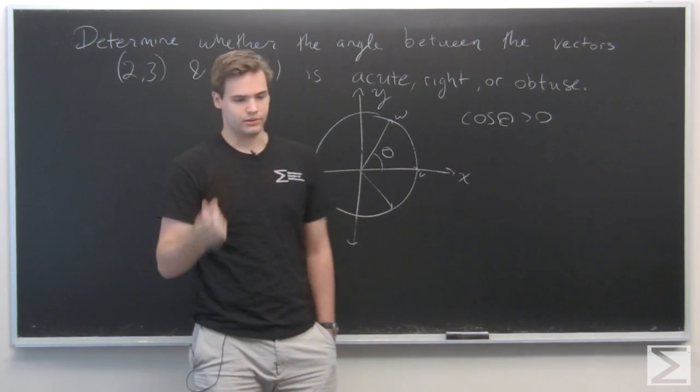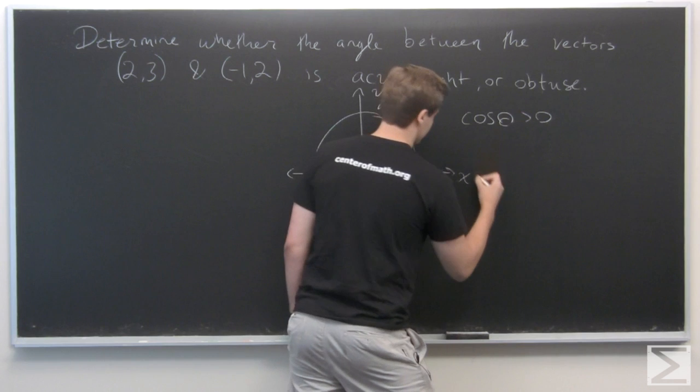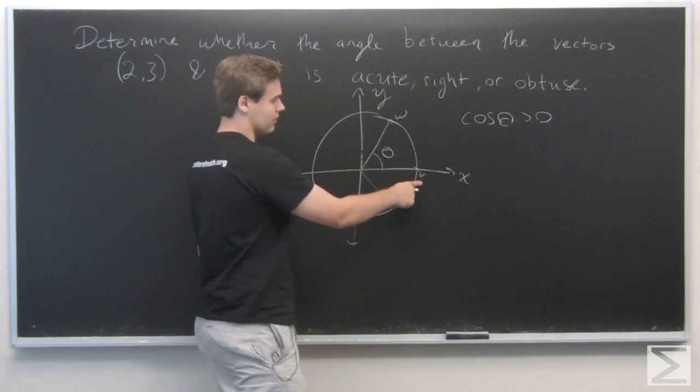And recall, from the definition of the angle between two vectors, we define cosine of theta to be if the two vectors here are v and w.